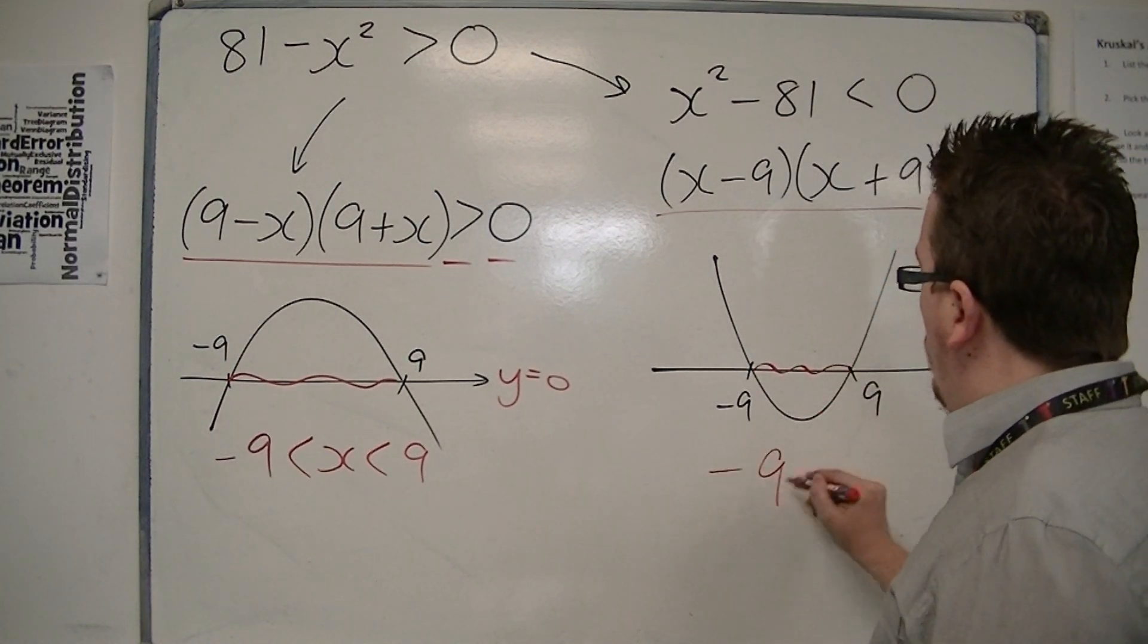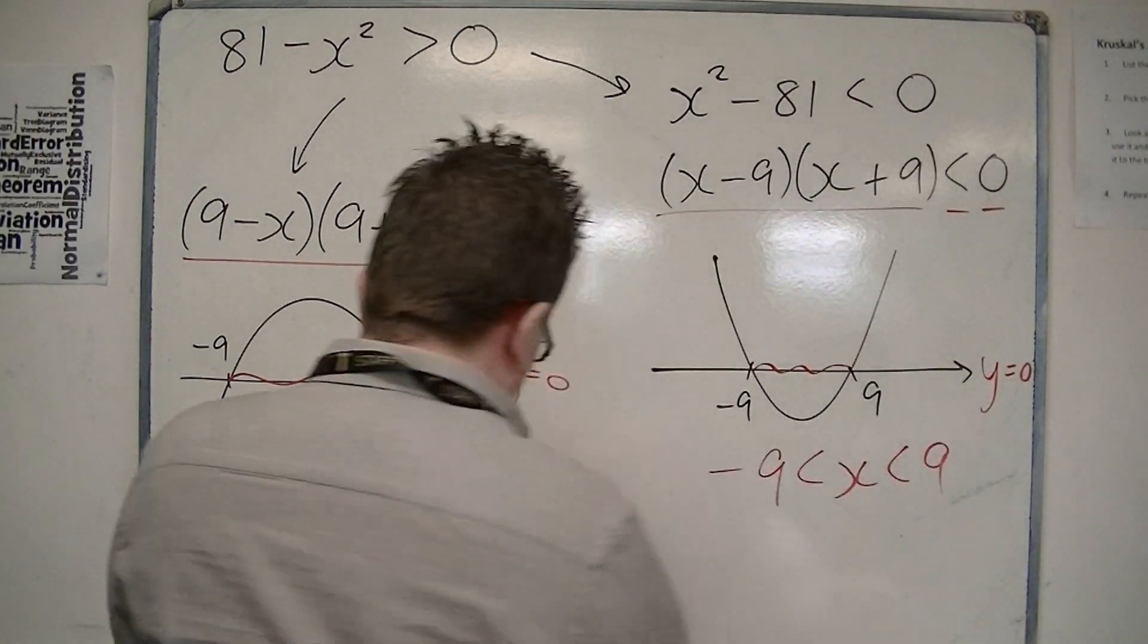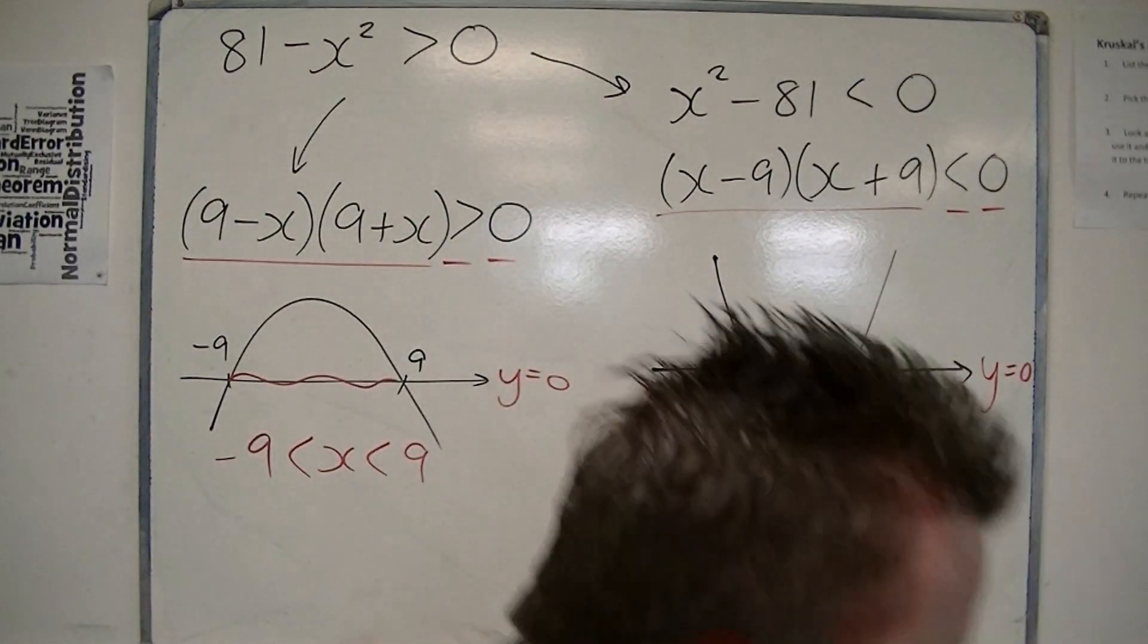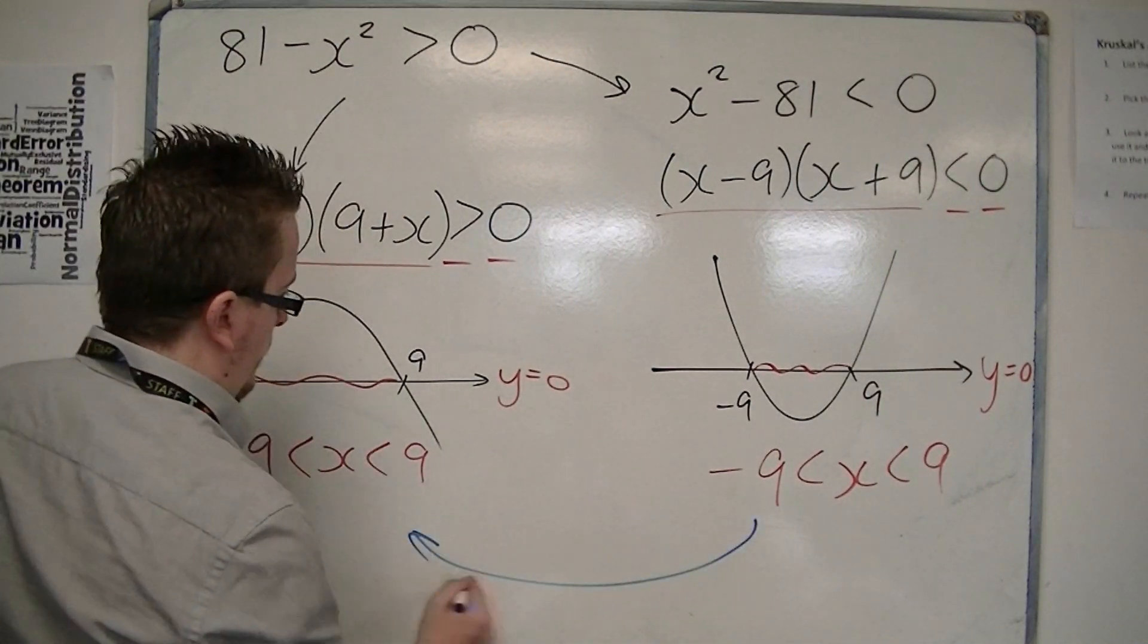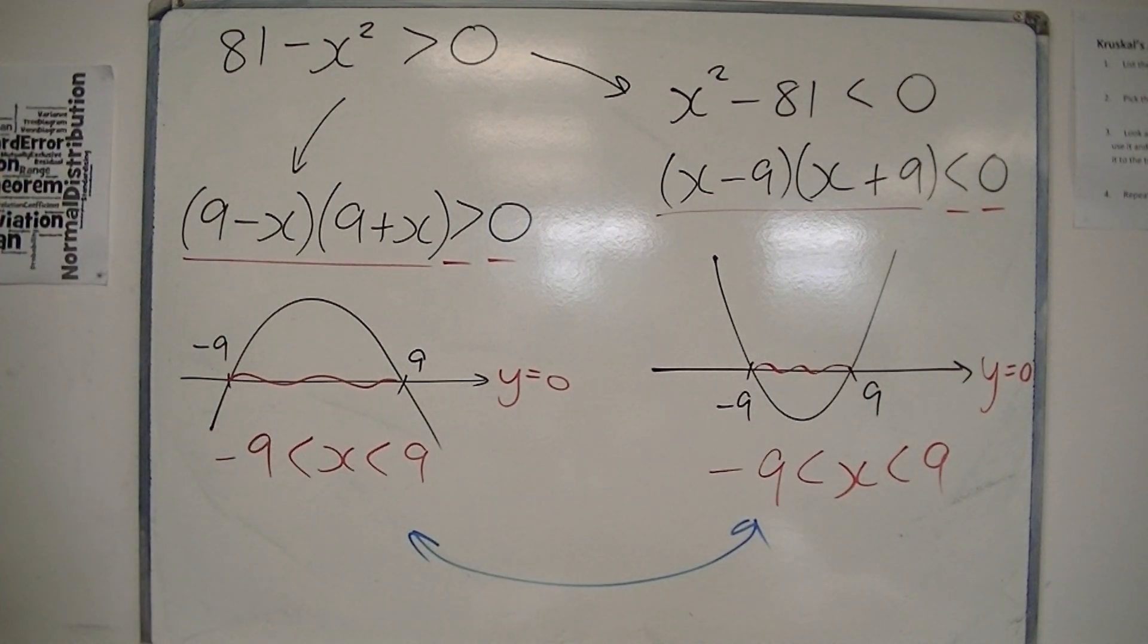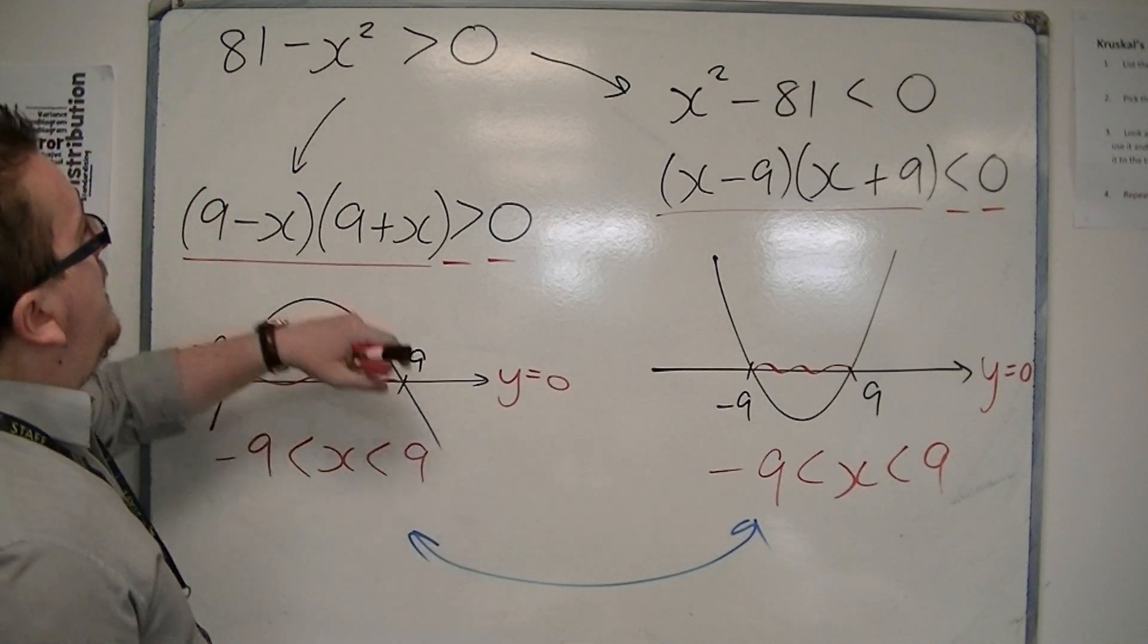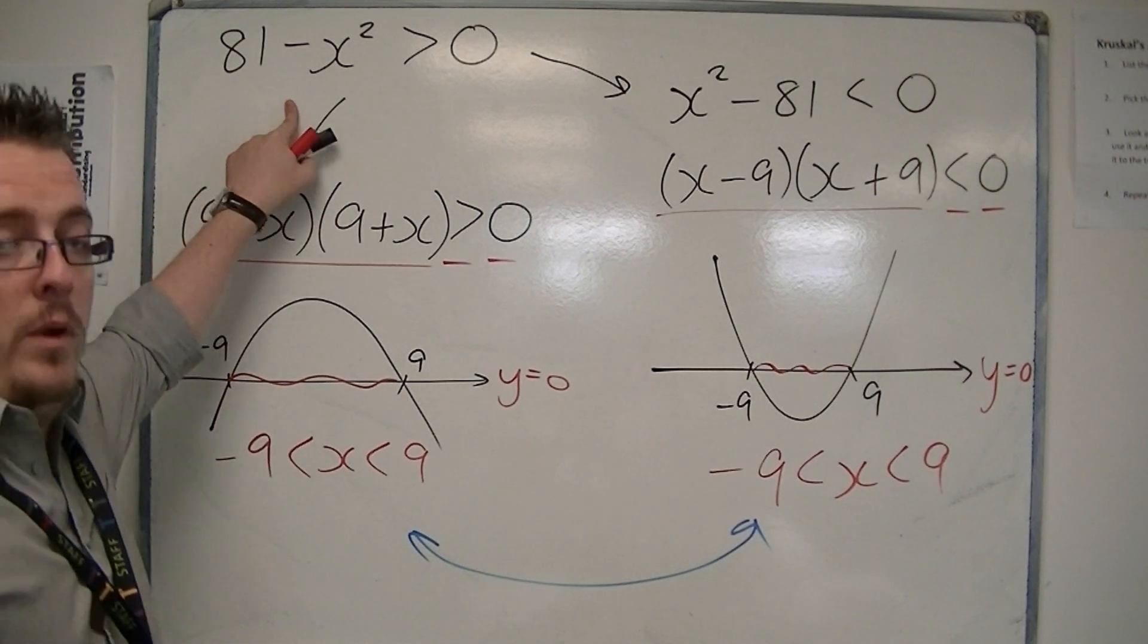So one region, one inequality. And you can see that these two inequalities are exactly the same. You get the same solution. So whichever way around you want to do it, it doesn't matter what your starting inequality is.